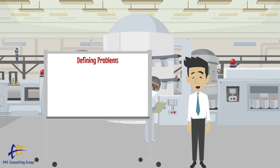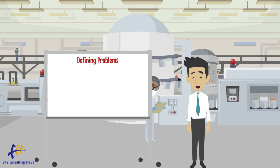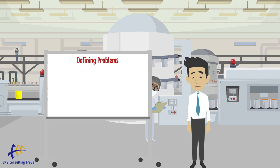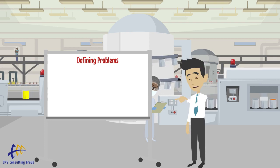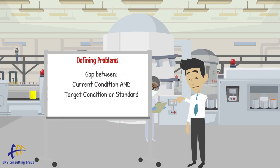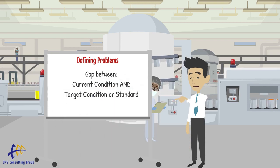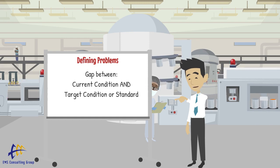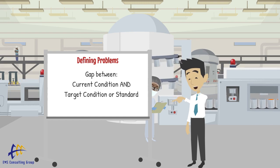What most people think of as a problem is generally too narrow of a definition. We define a problem as the gap between the current condition and the target condition or standard. This broader definition will allow for an array of problems at multiple levels.